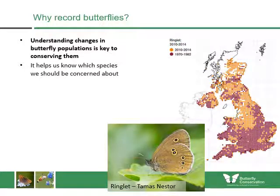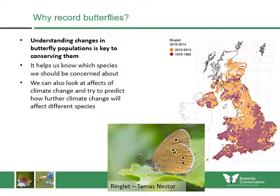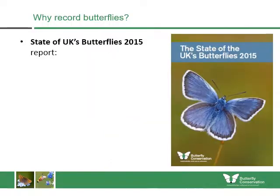Species such as the ringlet are increasing, so whenever we're doing conservation work we might not focus upon species like that as much. We can also look at the effects of climate change and try to predict how future climate change will affect different species of butterfly.